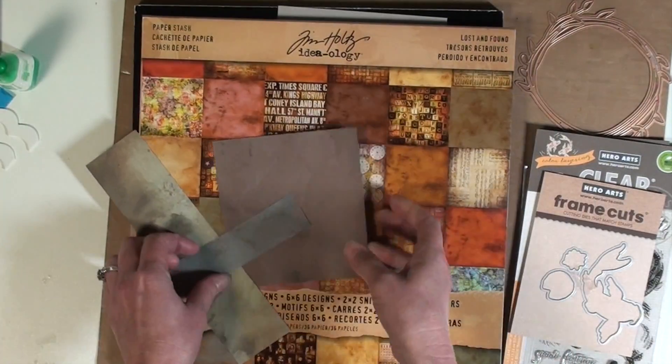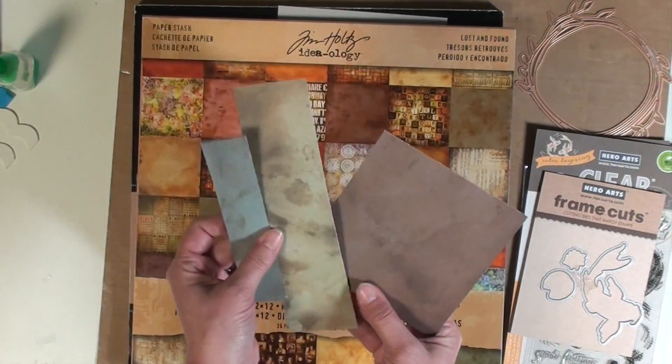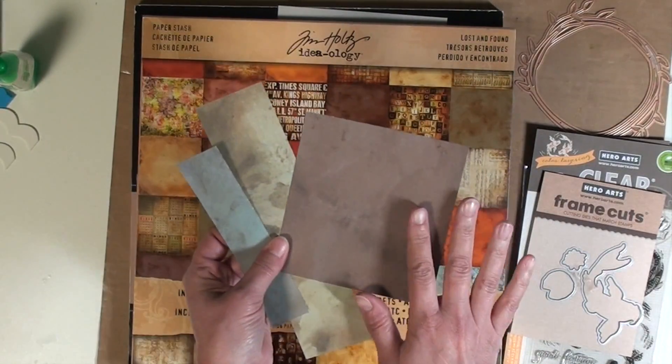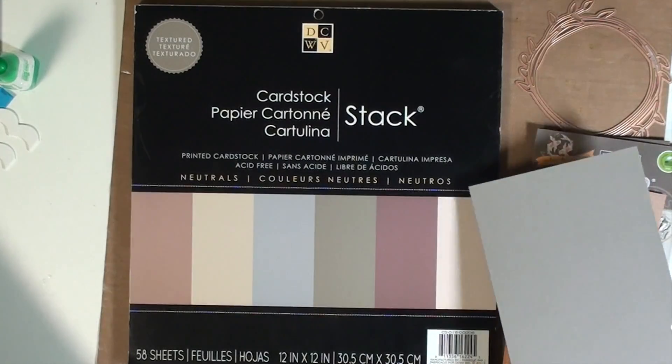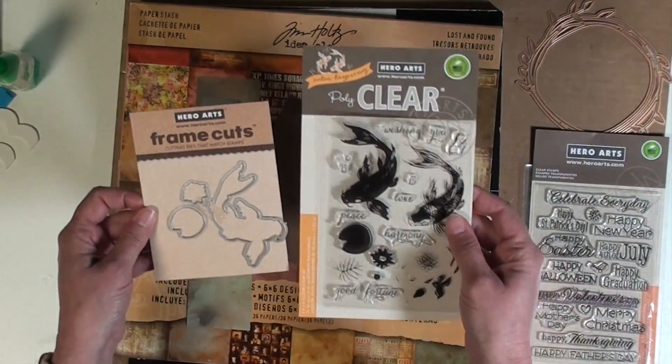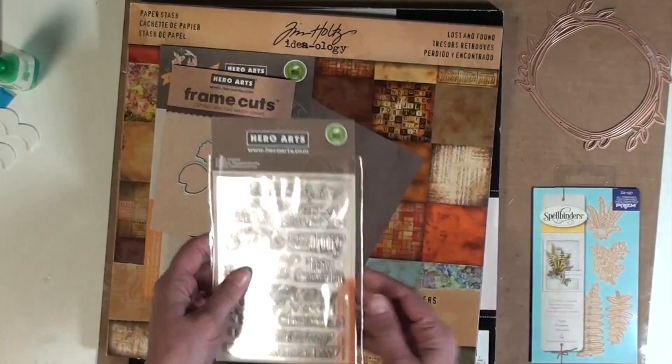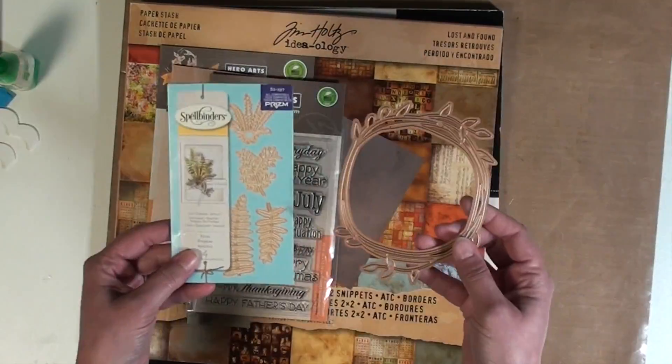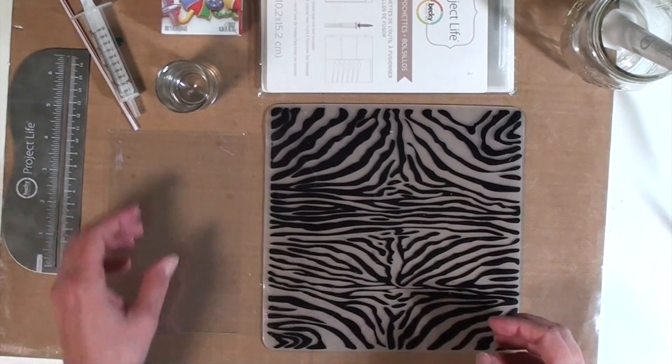So first I'll start off showing some of the papers I used from this Tim Holtz stash. I picked out a blue, a green, and a brown paper to use from this. Then for my card base I used this light gray color cardstock from this other collection. I also used some Hero Arts layering dies and sentiments as well as a couple of Spellbinders dies to create this card.